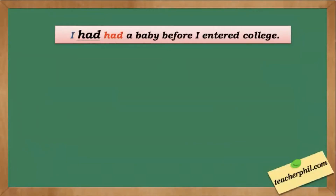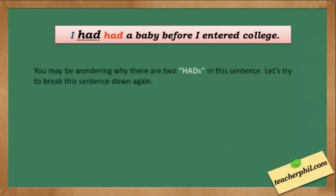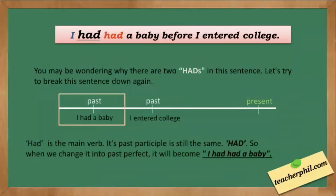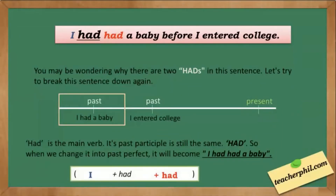The last example: I had had a baby before I entered college. You might be wondering why there are two 'hads' in this sentence. The first past event is 'I had a baby,' and the second is 'I entered college.' 'I had a baby' is our past perfect because it happened before I entered college. 'Had' is a main verb and its past participle is still the same — 'had' — so when we change it into past perfect it becomes: I had had a baby. That is 'I' plus auxiliary 'had' plus 'had' as the main verb.